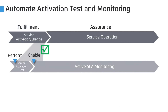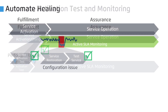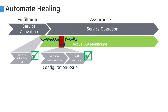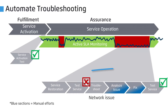In summary, we have shown three important parts of orchestrated assurance. One: testing should be done as part of service delivery to ensure it is working as expected. Two: it is also important to start active monitoring of the service as part of delivery, to ensure the service continues to meet customer expectations. And three: active monitoring enables automated healing, and can also automate complex troubleshooting scenarios so that network issues can be proactively found and fixed.